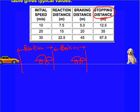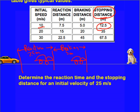So we can see for 10 meters per second, the reaction distance is 7.5 meters. The braking distance, 5 meters. And if you add those two together, you get the 12.5 meters in the table. And so what our job is going to be is to calculate the stopping distance for 25 meters per second, which is not given on the table. And to do that, we'll need to figure out the reaction time as well.